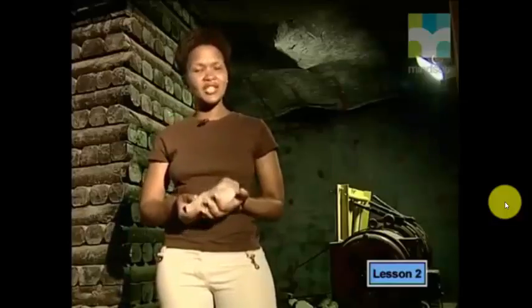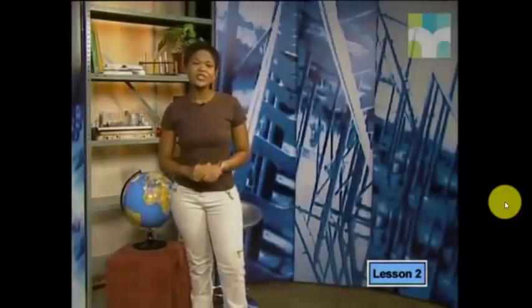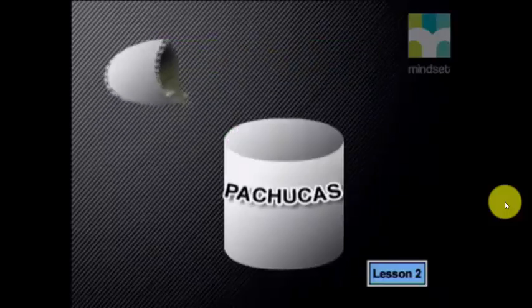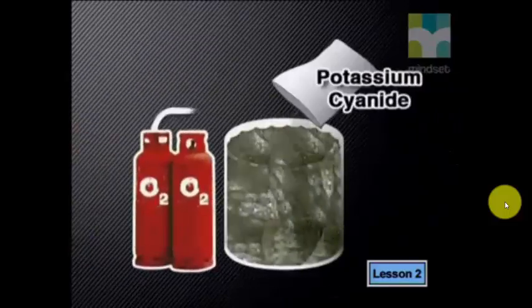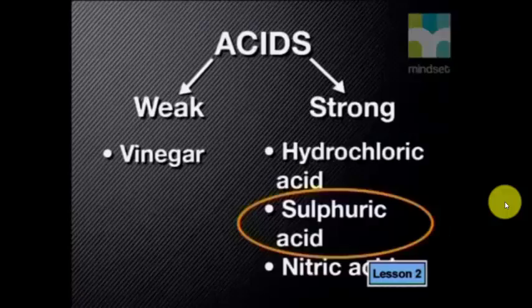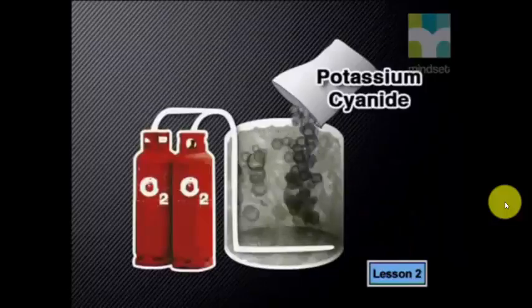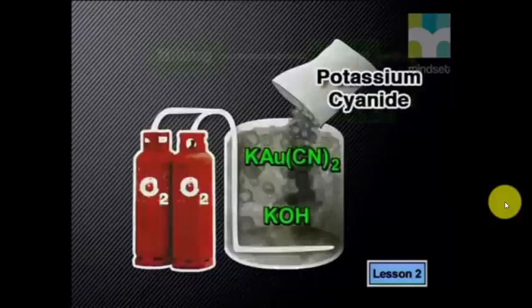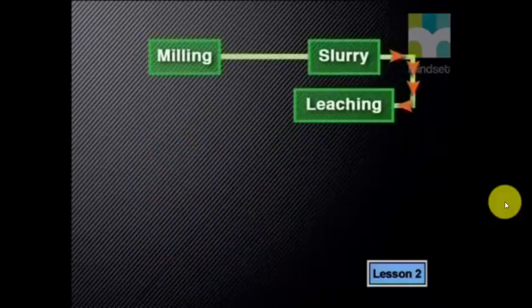The first step in extracting gold from the ore is grinding and crushing the gold-bearing rock into a powder — this process is called milling. Next, water is added to the powdered solid, forming a suspension called a slurry. The slurry is pumped into large tanks called pachucas, where potassium cyanide is added and oxygen is bubbled through it. Although gold is an inert metal that does not react easily — not even with sulfuric acid — it does react in an aqueous solution of potassium cyanide and oxygen to form potassium gold cyanide and potassium hydroxide. This process of gold dissolving out of the powdered rock is called leaching.